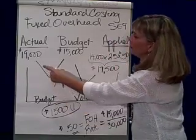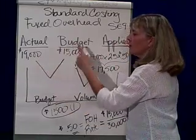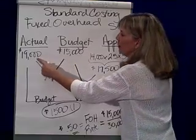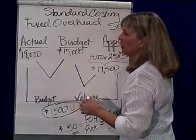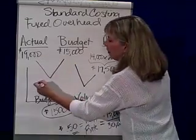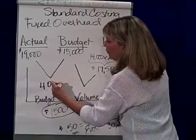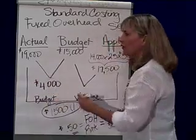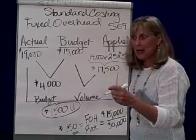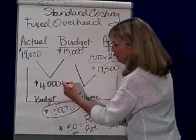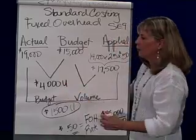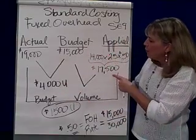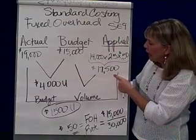Let's break it into the budget variance. Budget at the beginning of the year was $15,000; we actually spent $19,000, so we have a budget variance of $4,000. That's the big one — unfavorable.